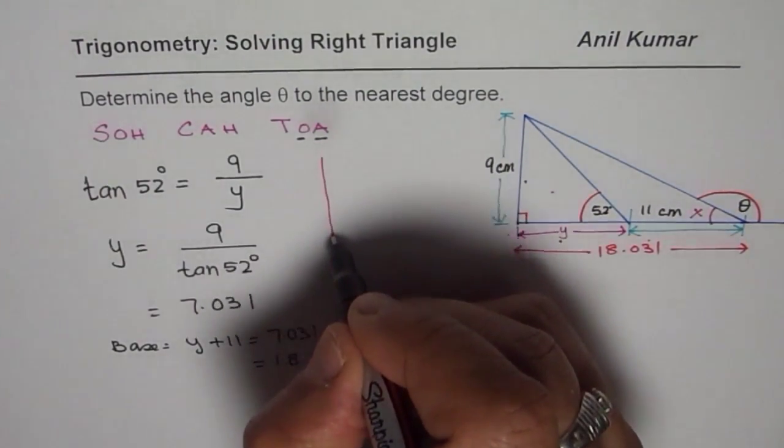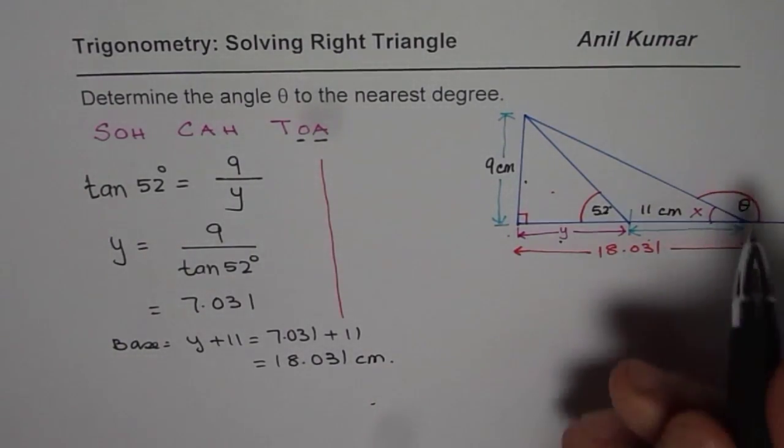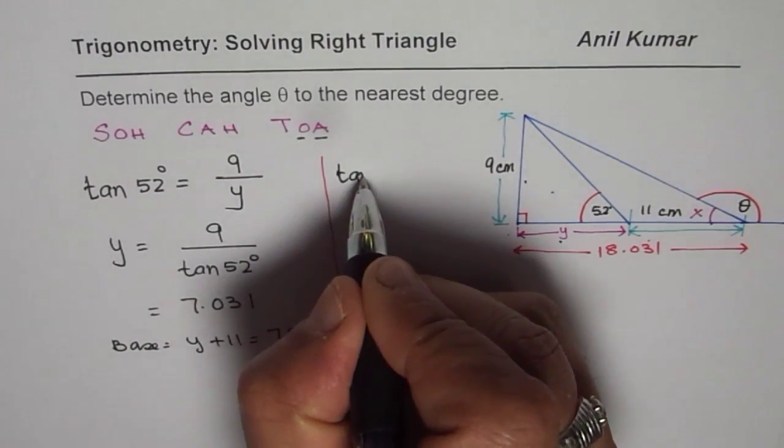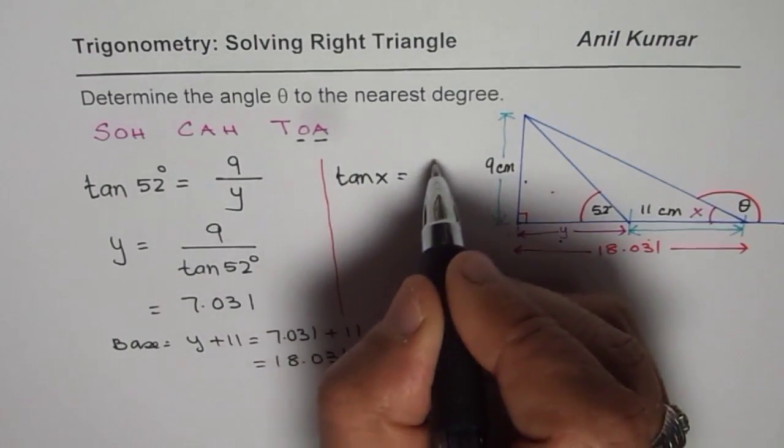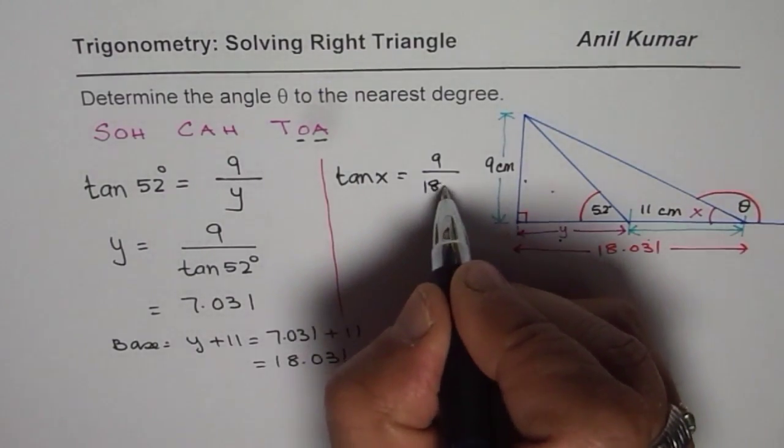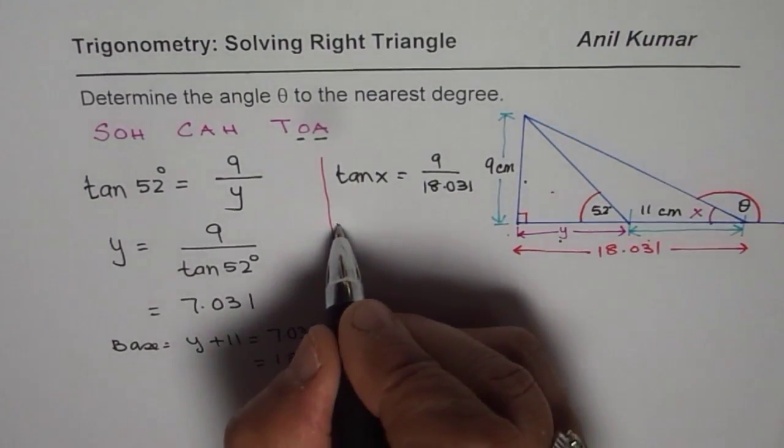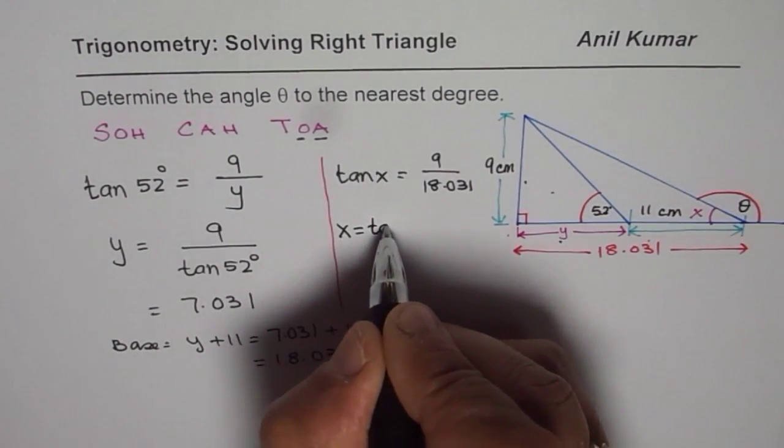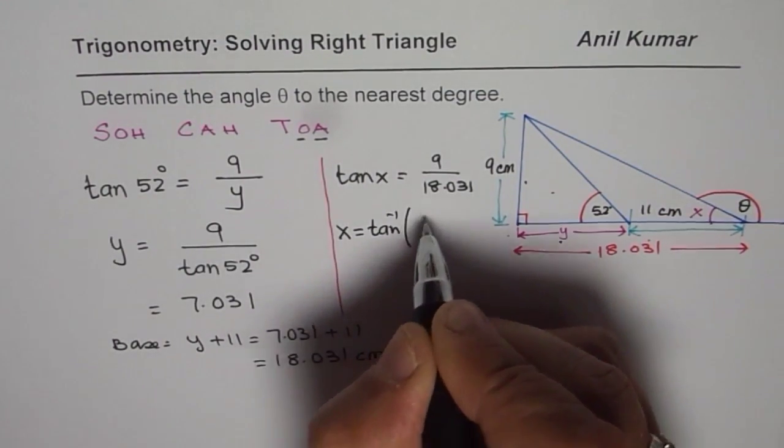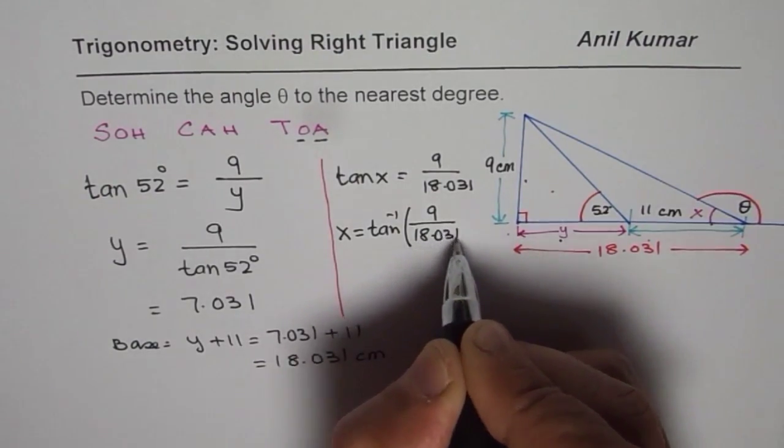So we will again apply the same trigonometric ratio, tan, but this time with the angle x. So we have tan of x as equals to 9 over this length of 18.031. So what is x equals to? x is equals to tan inverse of 9 divided by 18.031.